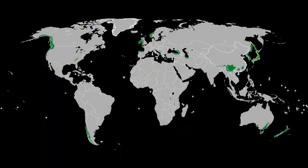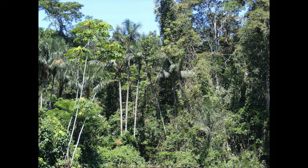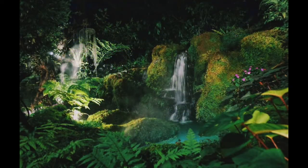Rainforests cover nearly 6% of the Earth's surface and are home to more than half of all plant and animal species in the world. These are highly diverse ecosystems, which have existed for more than 70 million years. Rainforests are usually located in the tropical regions of the world, and they have heavy rainfall that supports plant growth.